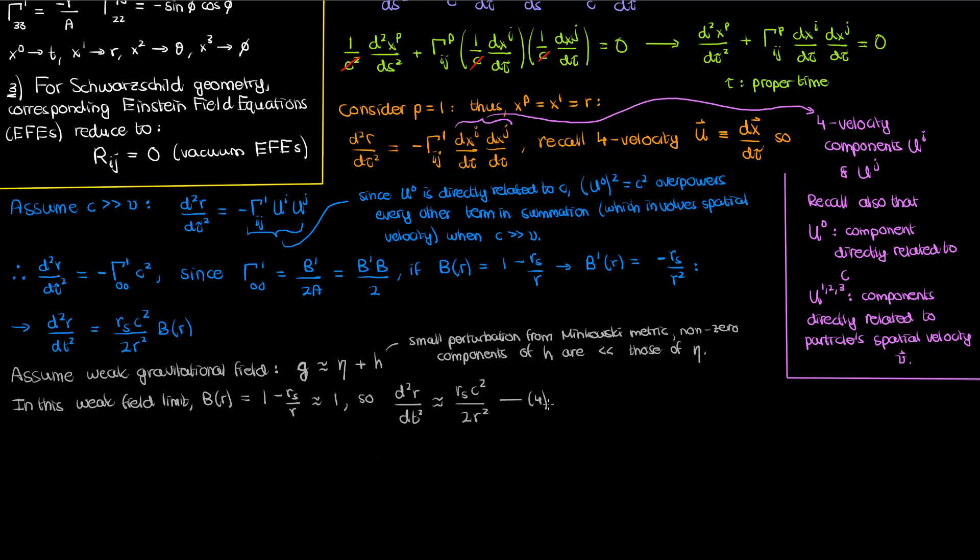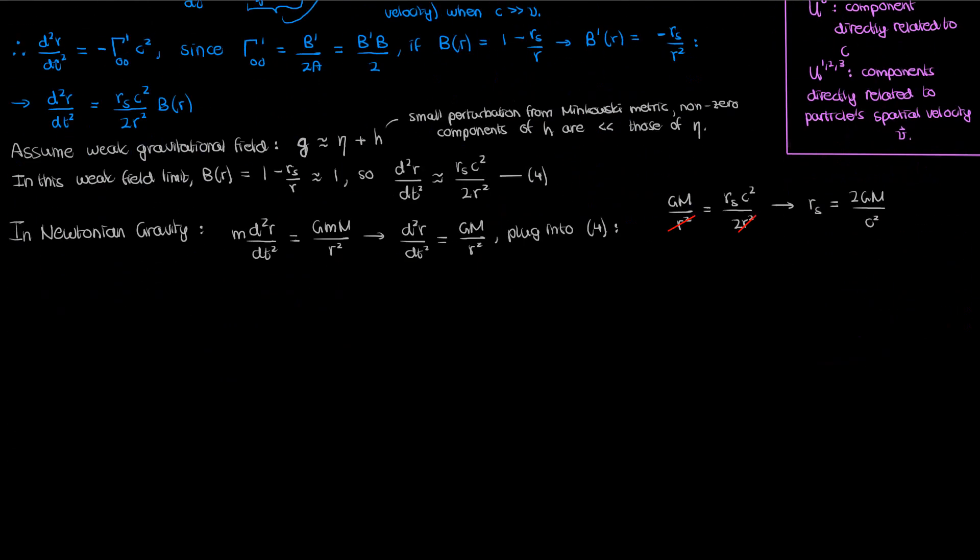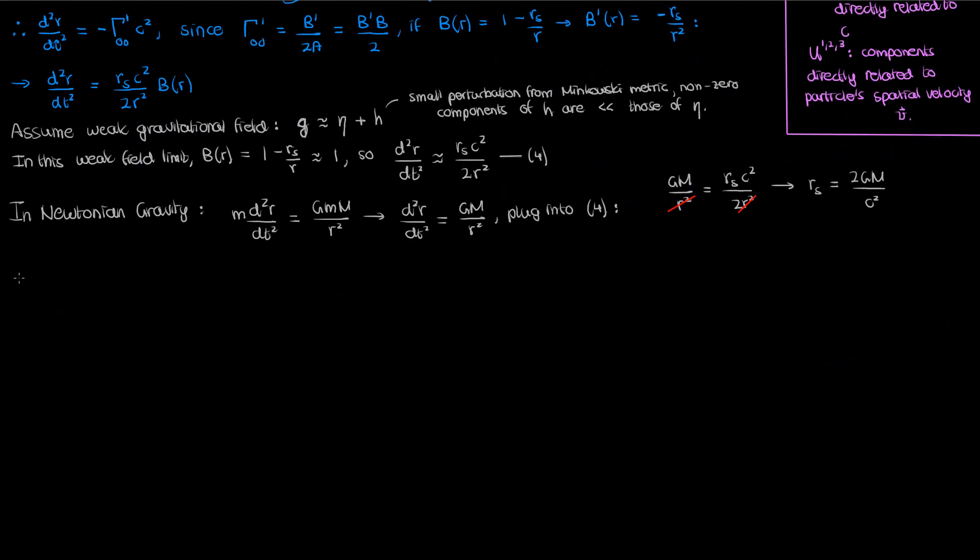Additionally, because we're assuming a weak gravitational field, we can use the physics of Newtonian gravity to write an equation for our acceleration in R. From Newton's second law and Newton's law of universal gravitation, the acceleration, after cancelling out the small mass m of the test particle, is just G times capital M over R squared. If I plug this into equation 4, I end up with the following. If I then isolate my R_S, I find that R_S is 2GM over C squared, where again capital M is the mass of our massive spherical object generating the Schwarzschild geometry.